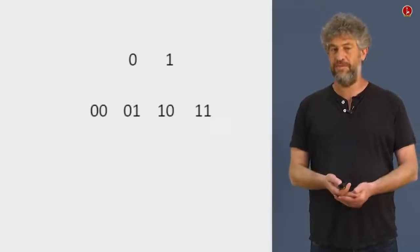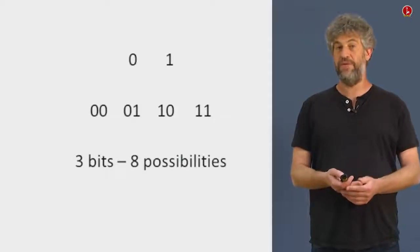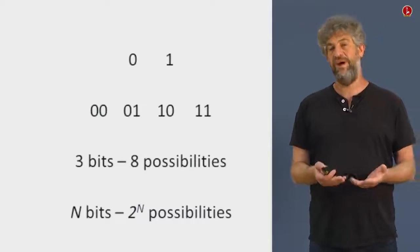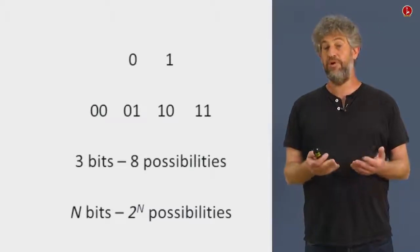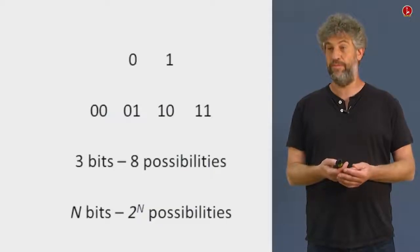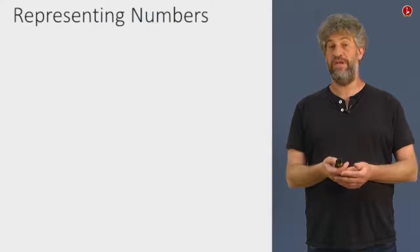But what can you do with only two values, zero and one? Well, you definitely can put two of them together and then you get four possibilities. Three of them together, you get eight possibilities. In general, if you have n of them together, you have 2 to the n possibilities. And now you can represent any 2 to the n different things that you may want to. For example, you can represent numbers. And this is what we're going to be interested in.